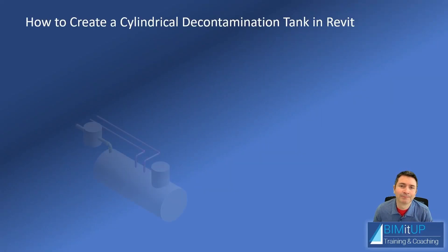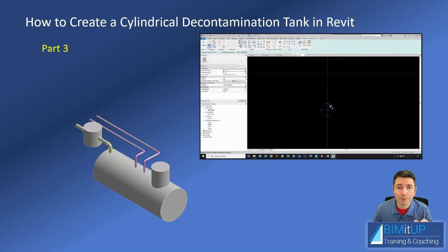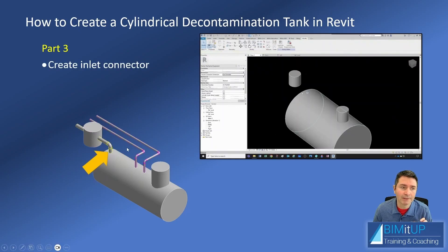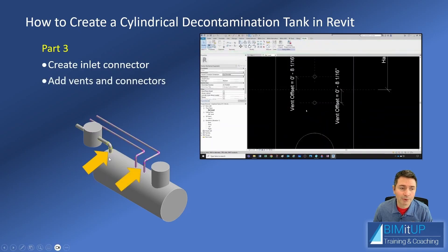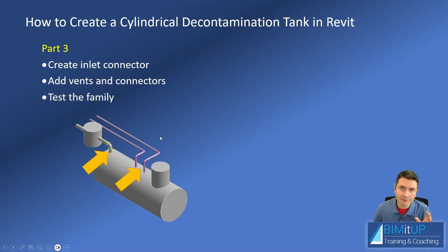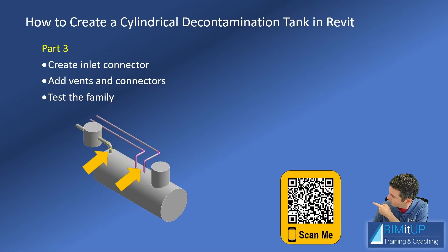Hi everyone, Alex here. Today I'm going to finish showing you how to create a cylindrical decontamination tank in Revit. This is going to be part three and in this part we're going to focus on creating the inlet connector and we're going to add the vent and its connectors. And then finally we're going to test the family. If you just want to download the family you can scan that QR code right there — it takes you to the download link.